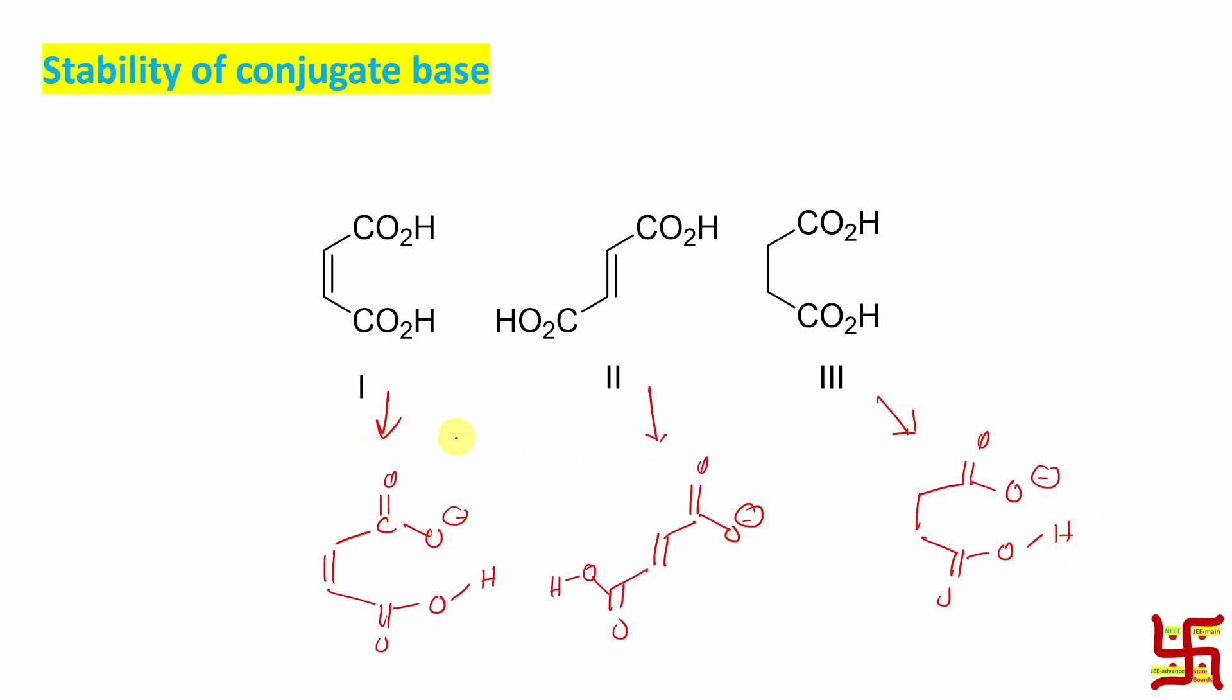Now if you look at these three conjugate bases, first of all in the option number one and two, what is the uniqueness? Yes, they are conjugated. So carboxyl group, we know this carboxyl group is actually electron withdrawing group and this is directly in conjugation with the another carboxyl group.